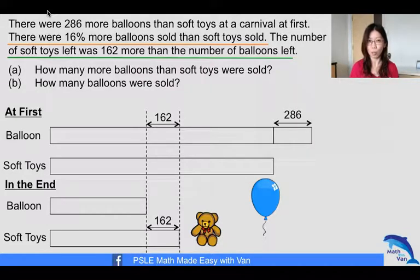So putting that information into the question, we know that this particular red portion is the number of soft toys sold, and let's call it 100%, agree? And if this is 100%, correspondingly this will also be 100% with regards to the balloon model.